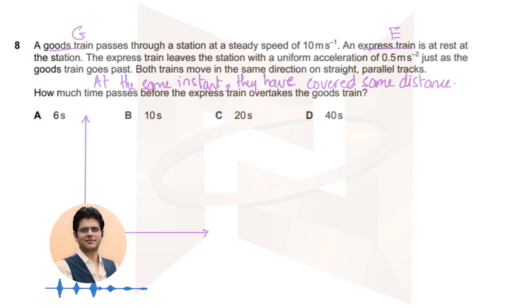The goods train is passing a station at a steady speed, so the speed-time graph would look like this, because in questions it's easier when you can visualize it using a diagram.